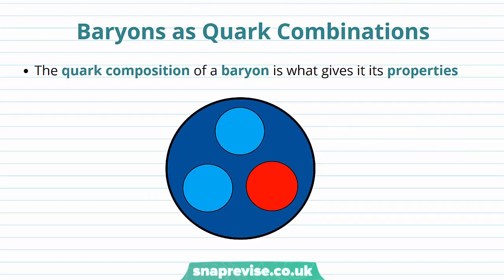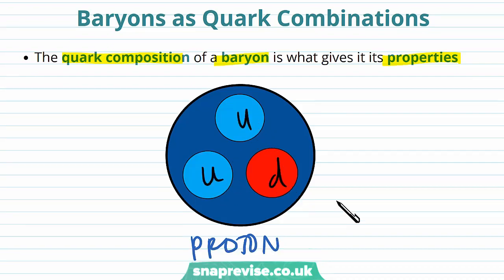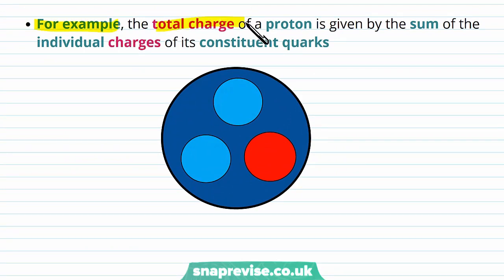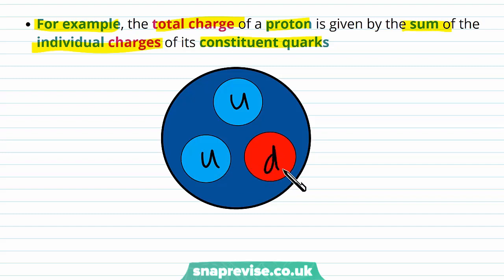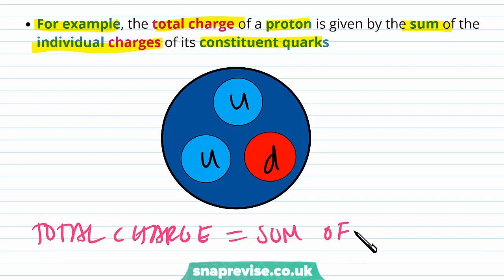Now that we understand what baryons are, we're going to look at baryons as quark combinations. The quark composition of a baryon is what gives it its properties. For example, the total charge of a proton is given by the sum of the individual charges of its constituent quarks — two up quarks and one down quark.